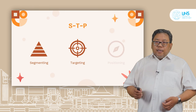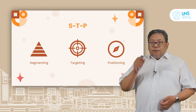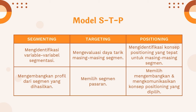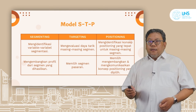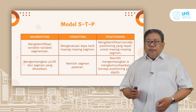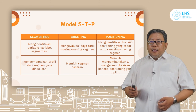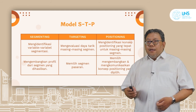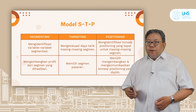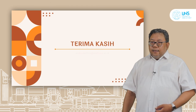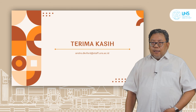Berikutnya adalah penentuan segmenting, targeting, dan positioning. Di dalam model STP ini, dari segmenting mengidentifikasi variable-variable segmentasi. Dari targeting mengevaluasi daya tarik masing-masing segmen. Dan positioning mengidentifikasi konsep positioning yang tepat untuk masing-masing segmen. Lalu segmenting untuk pengembangan profil dari segmen yang dihasilkan, targeting-nya memilih segmen pasaran, dan positioning-nya memilih, mengembangkan, dan mengkomunikasikan konsep positioning yang dipilih. Demikian materi dari saya terkait dengan mata kuliah desain komunikasi visual 2. Terima kasih.